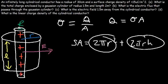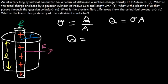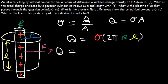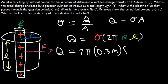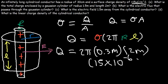We use the radius of the cylindrical conductor because the charge rests on that conductor, times the length of the Gaussian cylinder since the conductor goes on forever. So Q equals sigma times 2πRL. Let's calculate: the total charge enclosed is 2π times 0.3 meters times 2 meters times 15×10⁻⁶ coulombs per square meter.